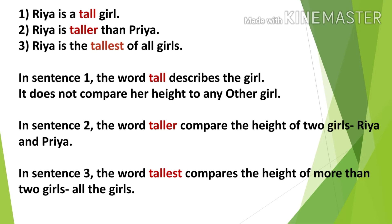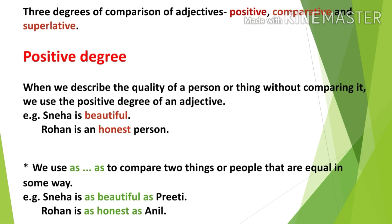So the question is: tall, taller, tallest — all describe a noun, but what do these three different words mean to us? Tall is an adjective, taller is an adjective, tallest is also an adjective, but they are used in different ways. This means there are three degrees of comparison of adjectives: positive, comparative, and superlative.